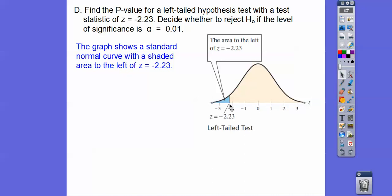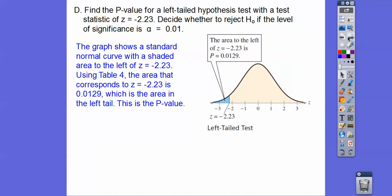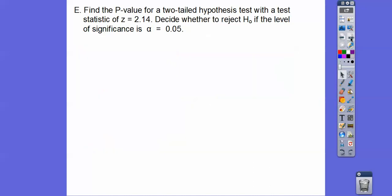So negative 2.33 would be just a little bit past negative 2. So there would be our rejection region we're going to talk about in the next lesson. So use the table, and if you look up Z equals negative 2.33, we find that the area is 0.0129. Now is 0.0129 less than 0.01? No, it's greater than, so we're going to fail to reject the null hypotheses.